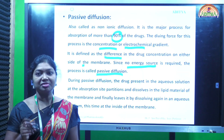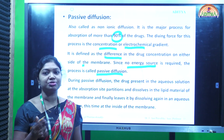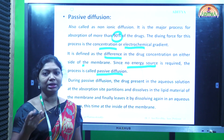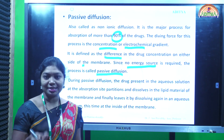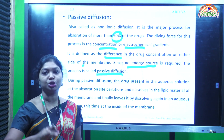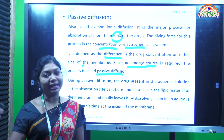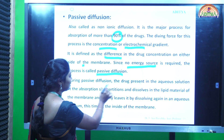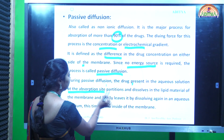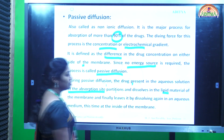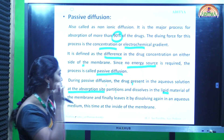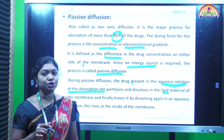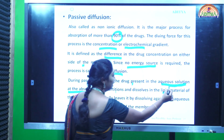During passive diffusion, the drug present in aqueous solution at the absorption site partitions and dissolves in the lipid material. After administration of a tablet or capsule, it enters the gastric fluids where it gets disintegrated. After disintegration and de-aggregation of the tablet, the drug dissolves in the gastrointestinal fluids - the aqueous solution - and then crosses the lipid membrane.